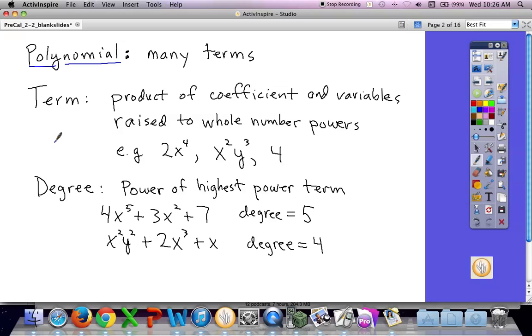Each term has a coefficient and some variables raised to some power. Terms are separated by addition or subtraction, but there's never an addition or subtraction in the middle of the term. So those are just some examples of terms. You see this here, the coefficient is 2, and then it's x to the 4th.